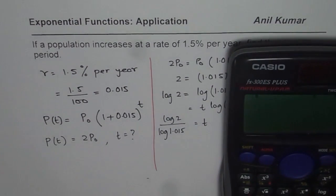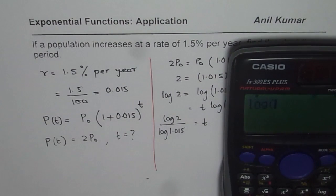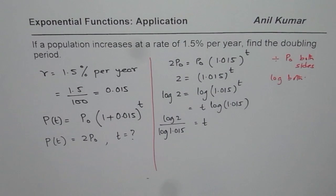Let us use the calculator to find the answer. So log 2, you can also use ln at times, divided by log of 1.015 equals to 46.55.